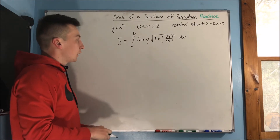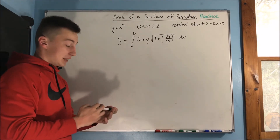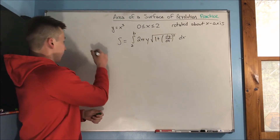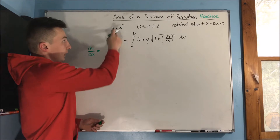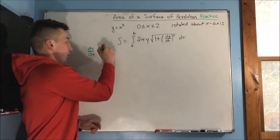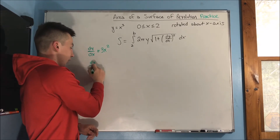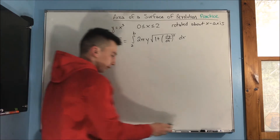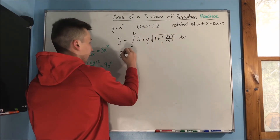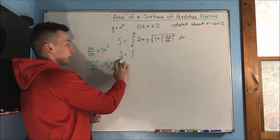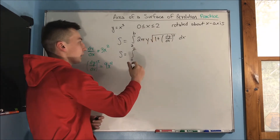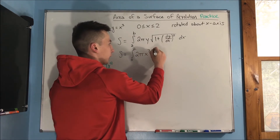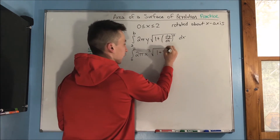So, what are some things we should do right now? Well, we can find dy/dx and square that, then plug it right into the formula. Since y equals x cubed, dy/dx would be 3x squared, meaning that dy/dx squared is going to be equal to 9x to the 4th. We can plug that right in, and we're going to get that the surface area equals the integral from 0 to 2 of 2π times x cubed times the square root of 1 plus 9x to the 4th, dx.